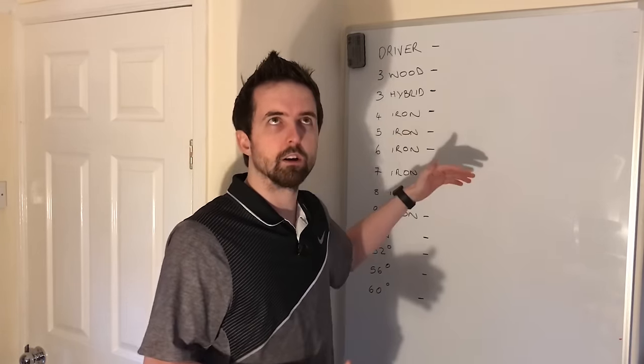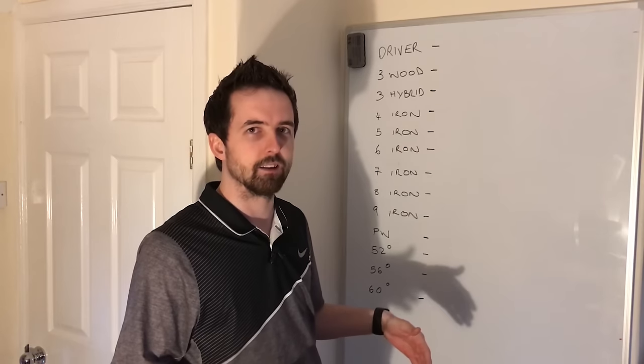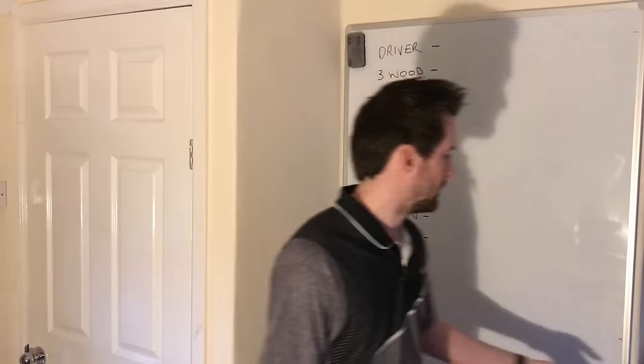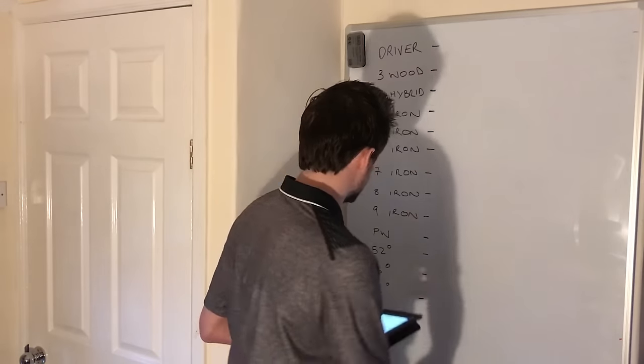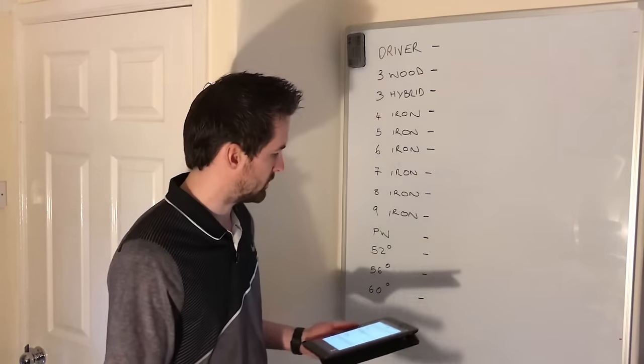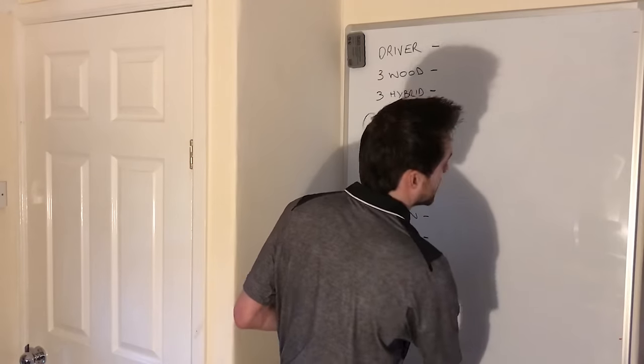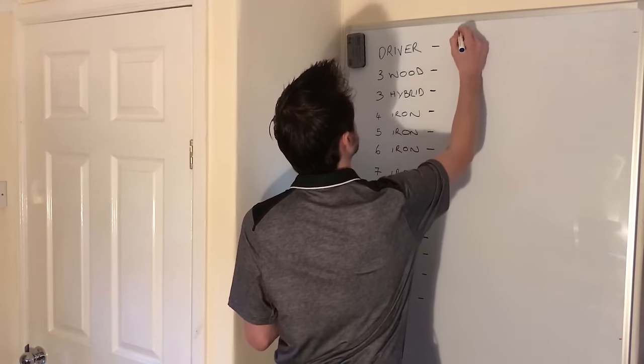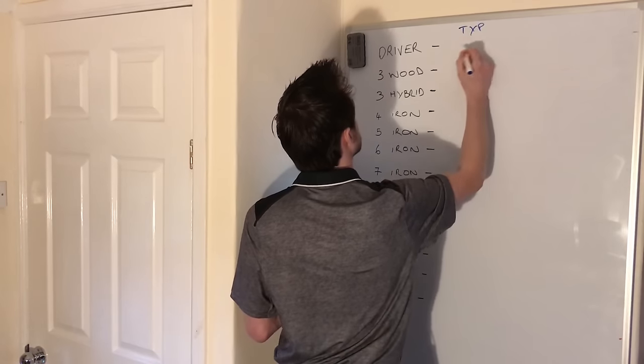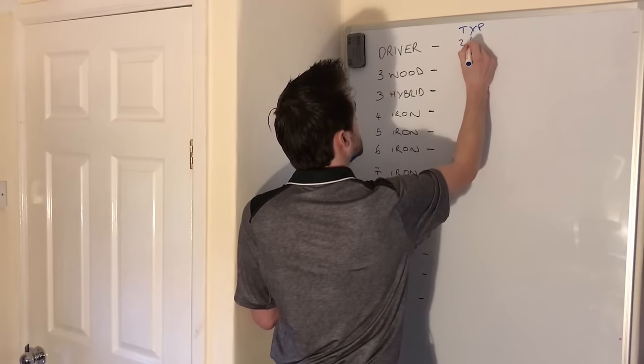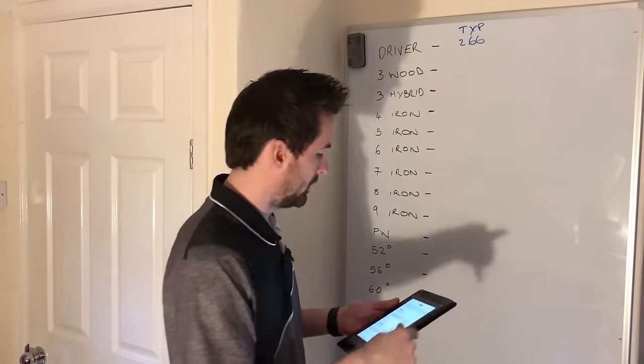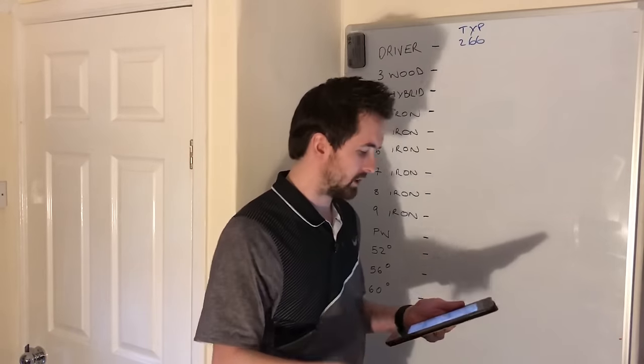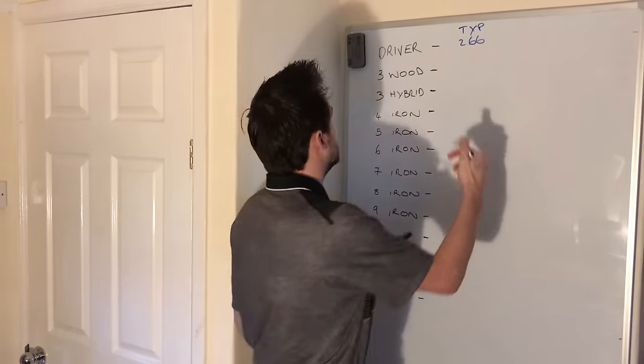Today, we're going to specifically look at what club does what in my bag. Without further ado, let's get straight into it. The only club that's not on here is my putter, for obvious reasons. No matter what, I'm going to need a putter. Let's have a look at the club. I'm going to write down the typical distances now. These are all from my game golf stats. If you haven't seen it, go and check out the video. You can also check out my game golf, which is in the link in the description down below.